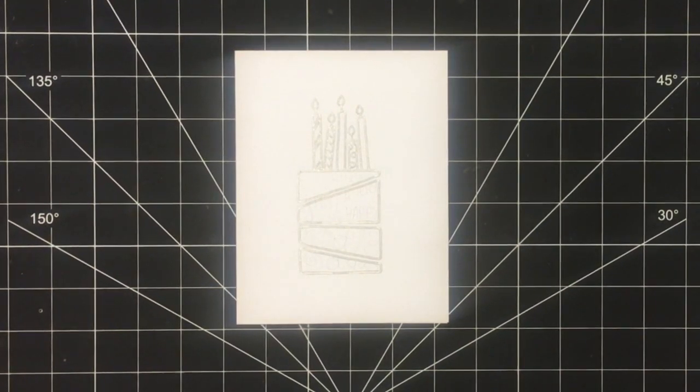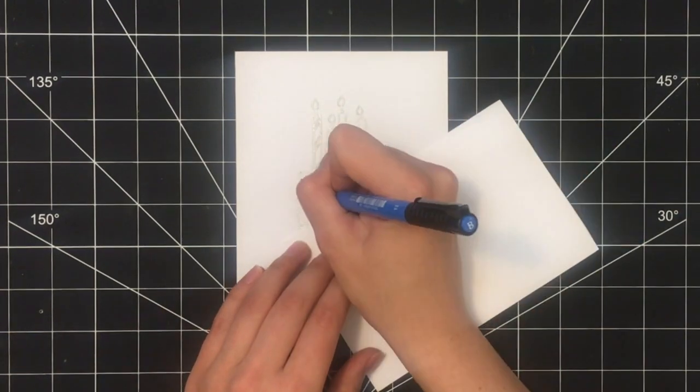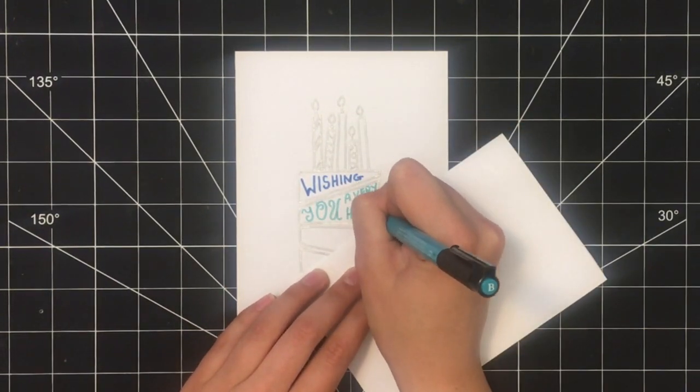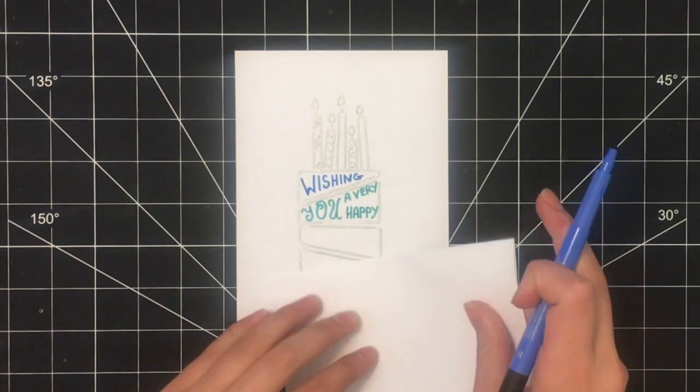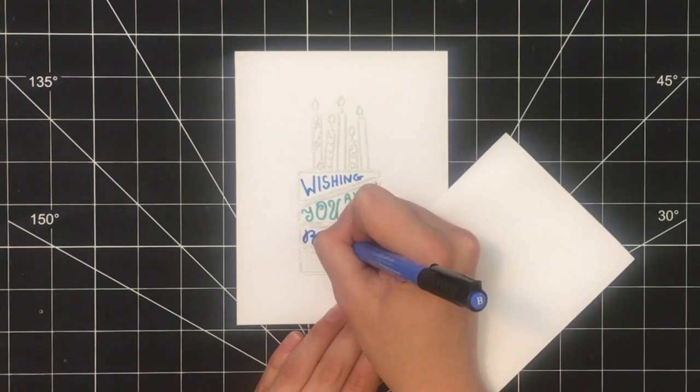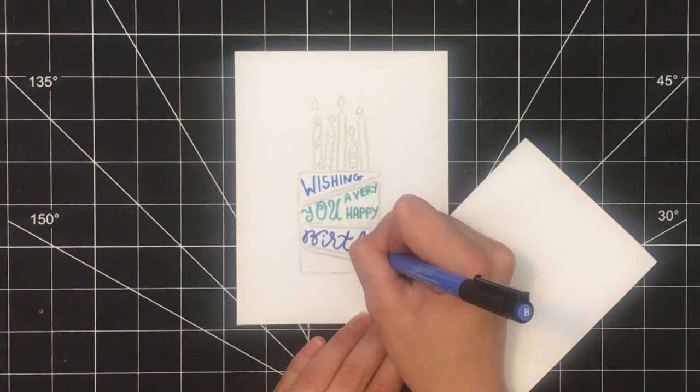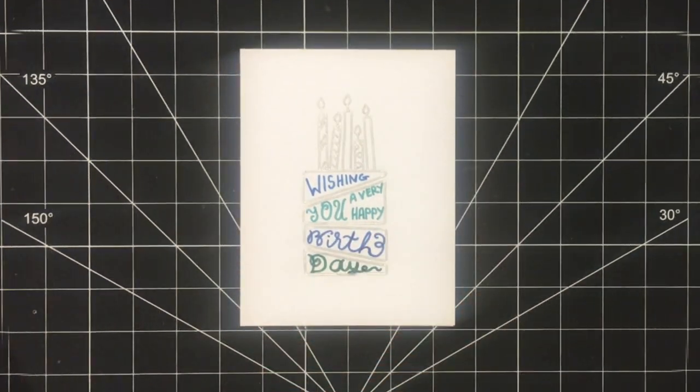Once I had everything outlined in silver, I simply alternated with three blue pens and one green pen for the lettering. I traced over the pencil lines with each different color pen, using a different color for each segment of the design.